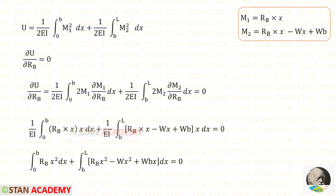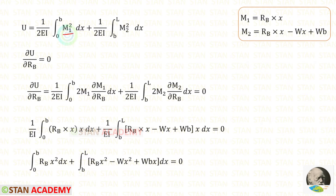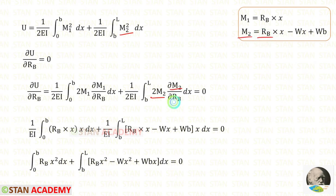Now let us use Castigliano's second theorem. We know that at point B the deflection is 0, so when we partially differentiate the strain energy U with respect to RB it will be 0. When we partially differentiate M1² we get 2M1, and we again differentiate M1 with respect to RB. Similarly, when we partially differentiate M2² we get 2M2, and we differentiate M2 with respect to RB.